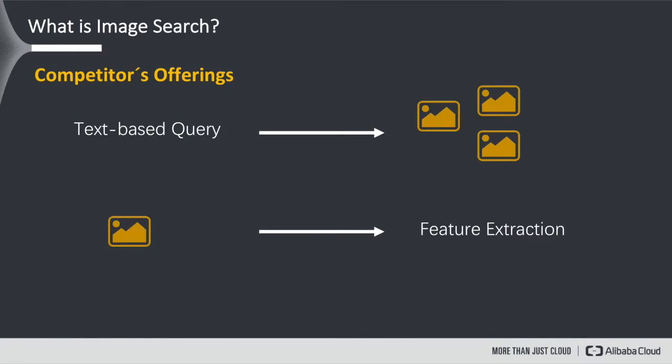So what is image search? Let us first take a look at the competitor's offerings. They usually divide into these two offerings. The first one is that you're providing a text-based query, and based on that query the service will return a set of images that correspond to this query — for example, a cat, a tree, or a car. An example of that would be Google image search.